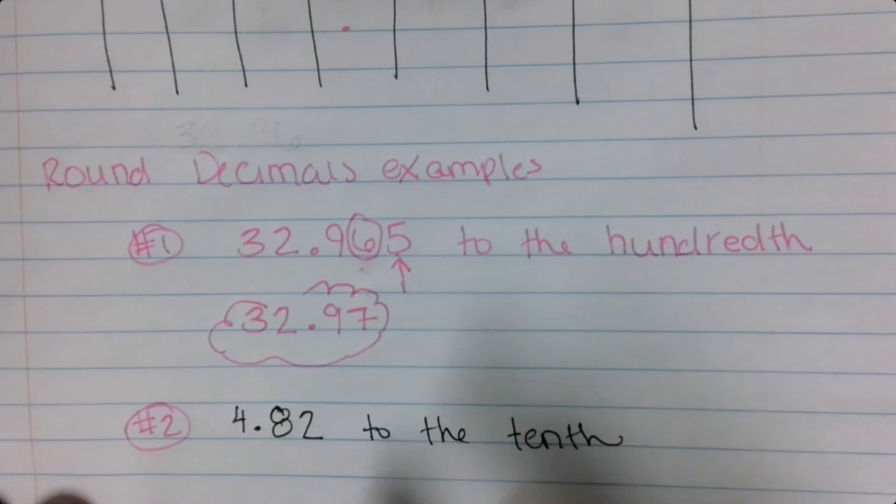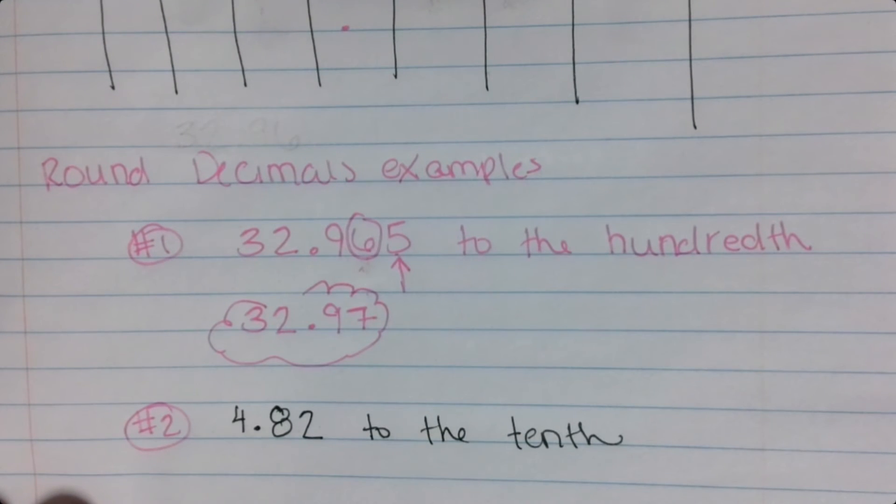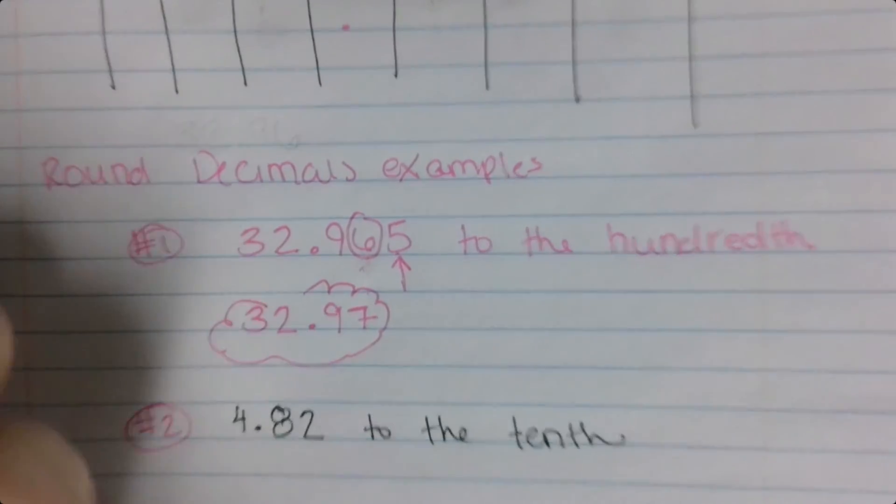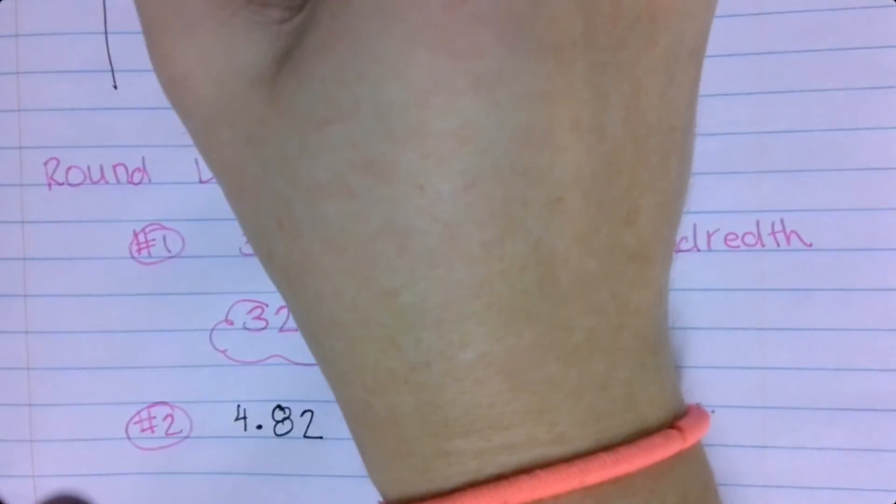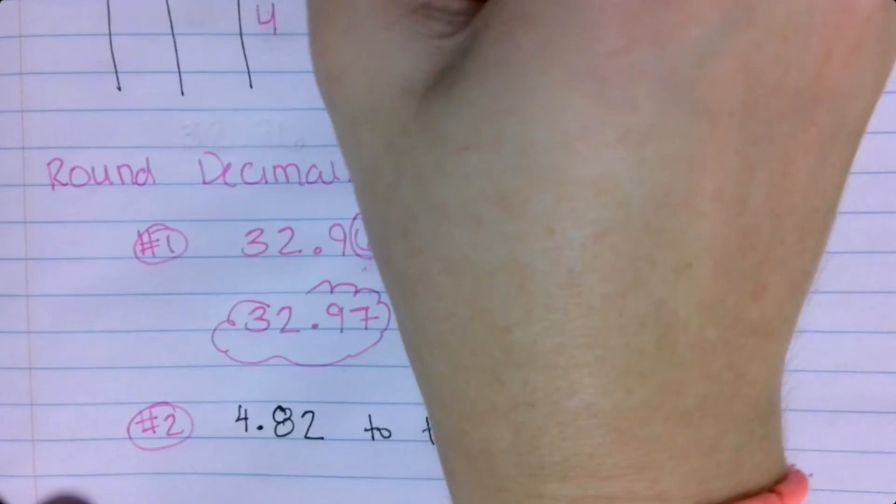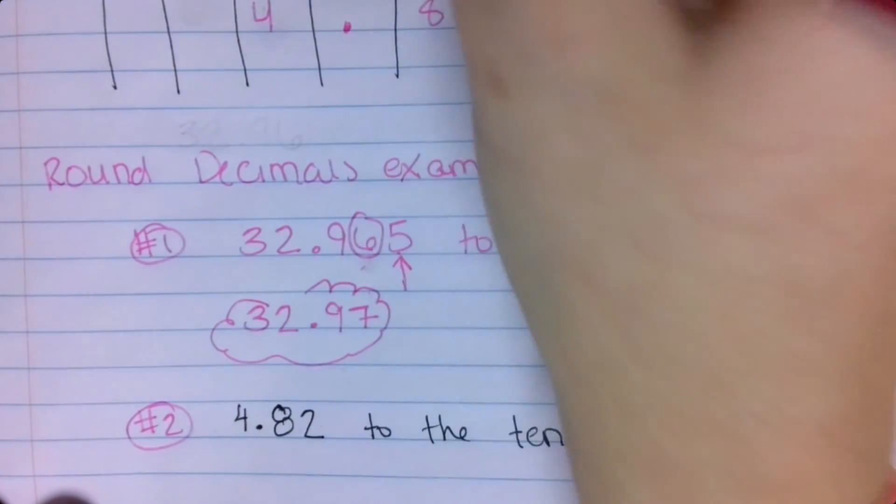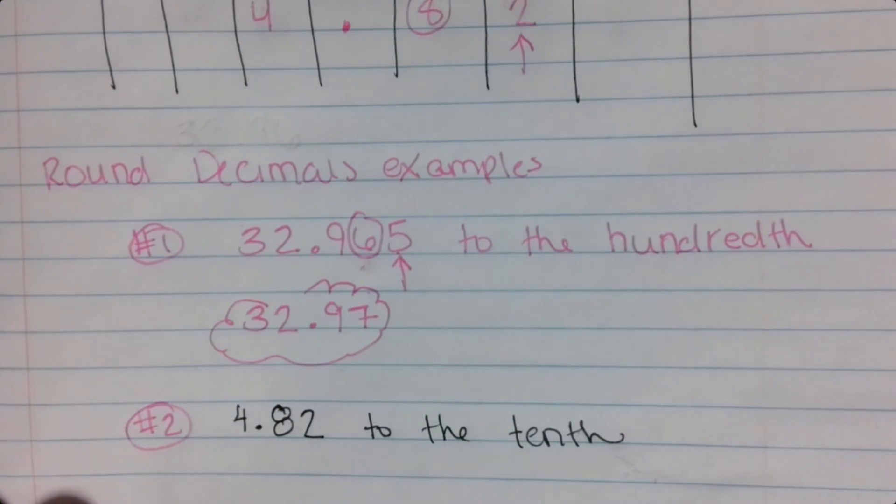So again, if I'm looking for the tenth spot, if I put it in my chart, that would be 4.82. The tenths is the eight, which means I look for the two for my rounding.